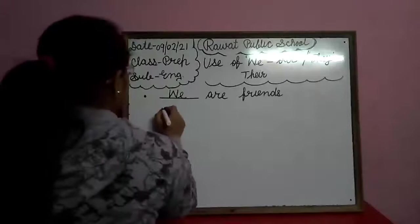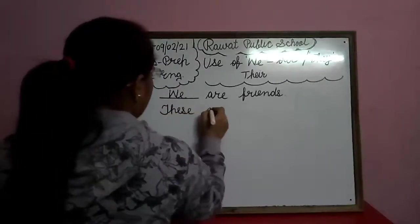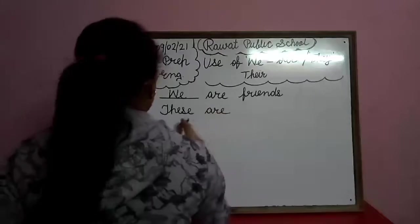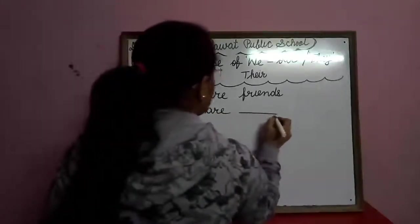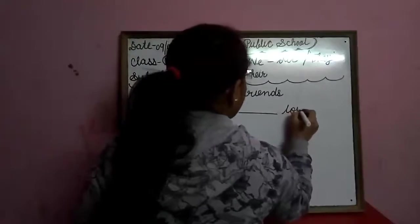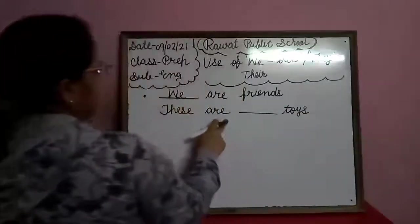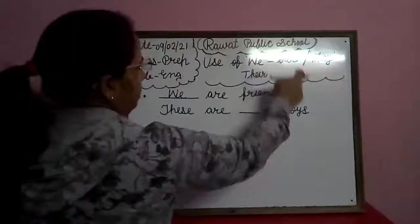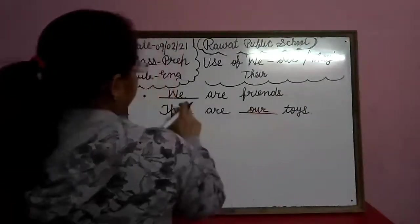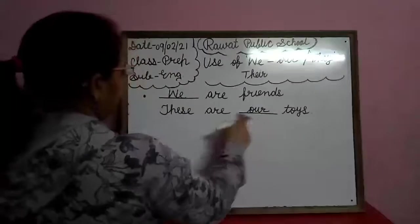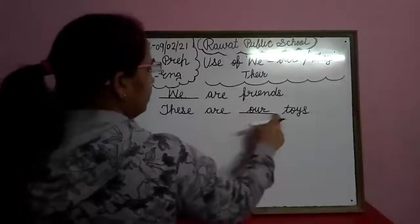These are — T-H-E-S-E — these are toys. These are our toys. So we will use of Our. Jab We hai, to hum Our ka use karenge. We are friends. These are our toys.